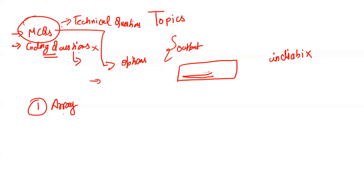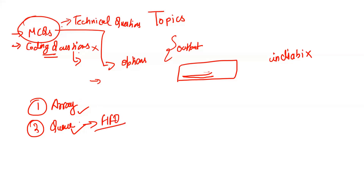The first and most important topic is Arrays — a very basic but important data structure. All the basics related to arrays should be clear. You can solve MCQs on platforms like Sanfoundry. The next important topic is Queue — basic questions can be asked, like how it is based on the FIFO (First In First Out) strategy, what operations can be performed, and what a deque (DQ) is.